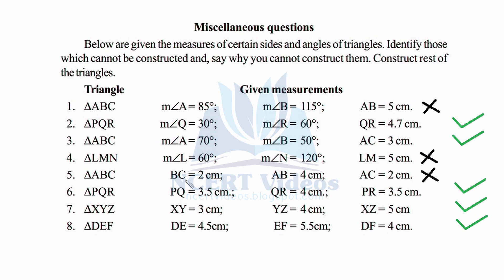For the fifth triangle, three sides BC are given. Using the property that the sum of any two sides must always be greater than the third side: 4 plus 2 equals 6, which is not greater than 2 — it must be strictly greater, not equal — therefore this triangle is not possible.